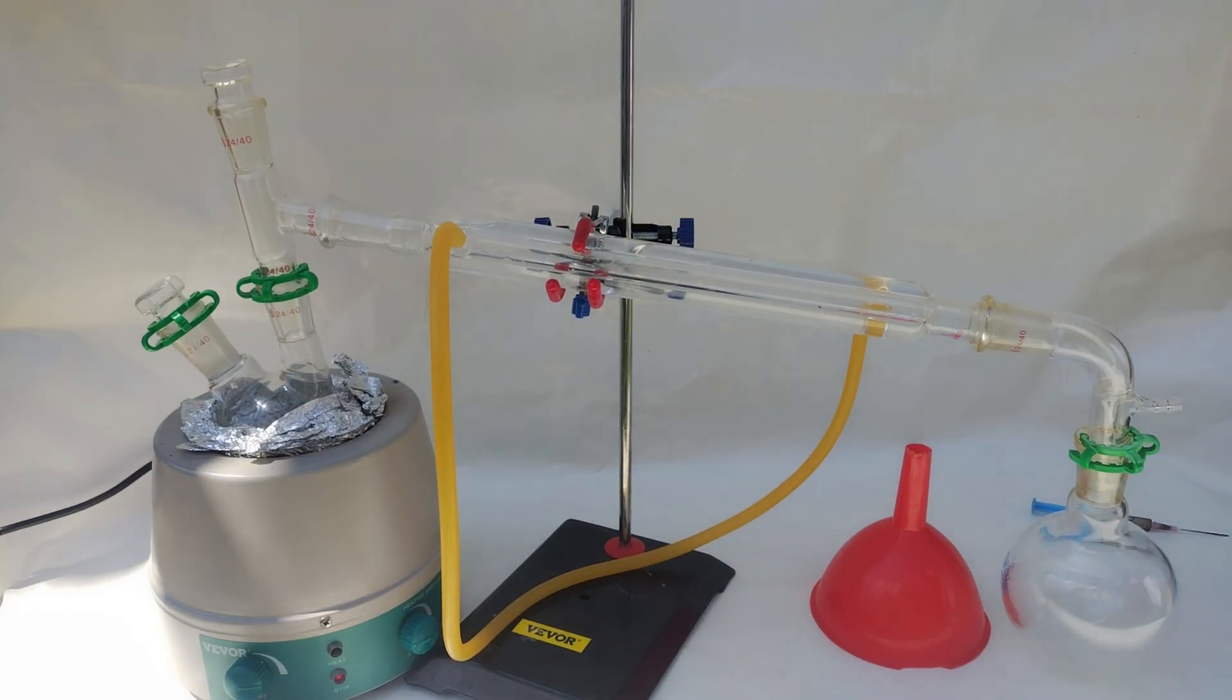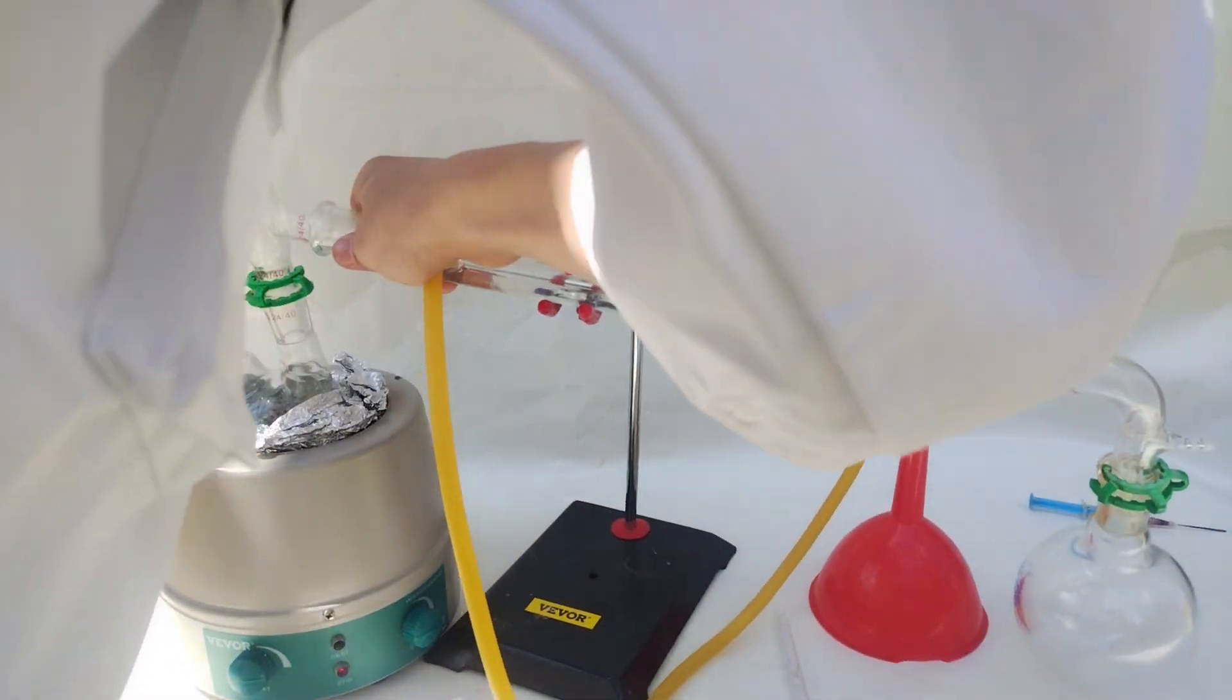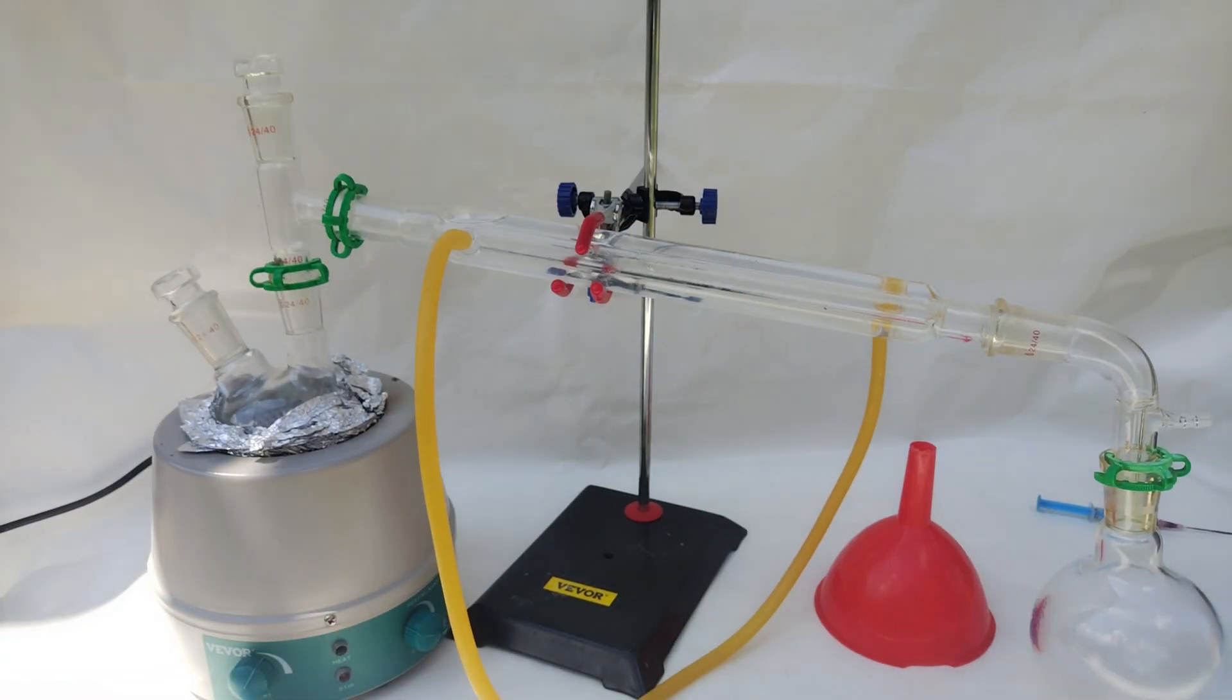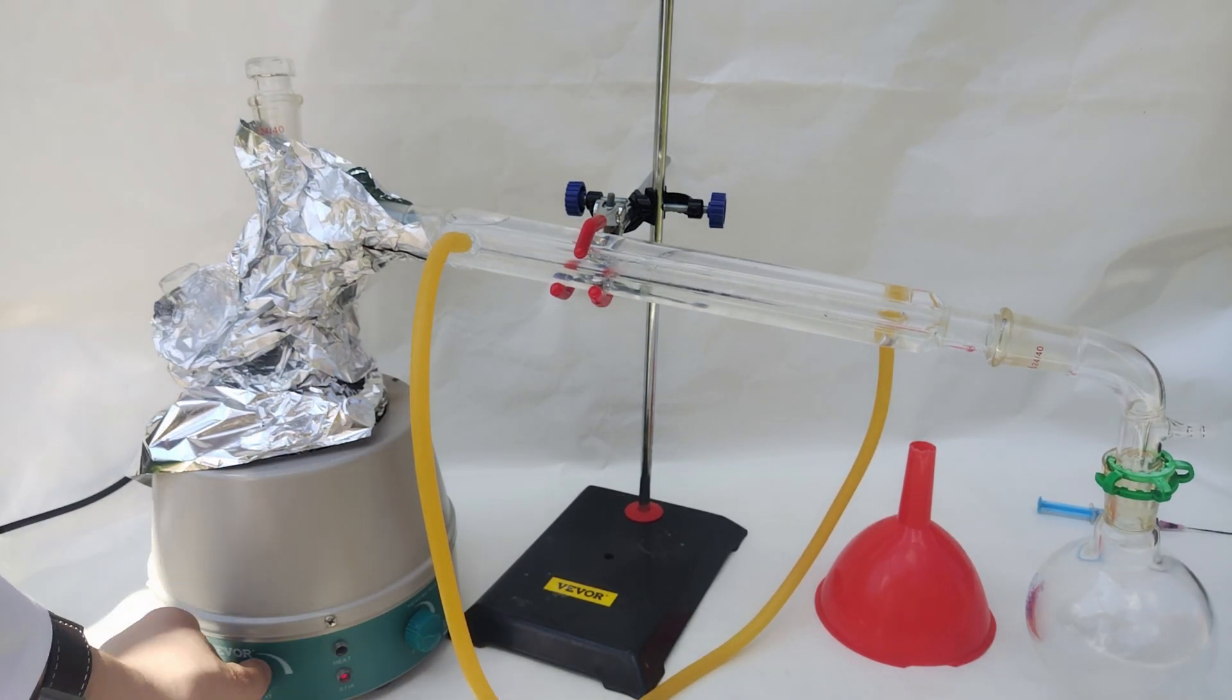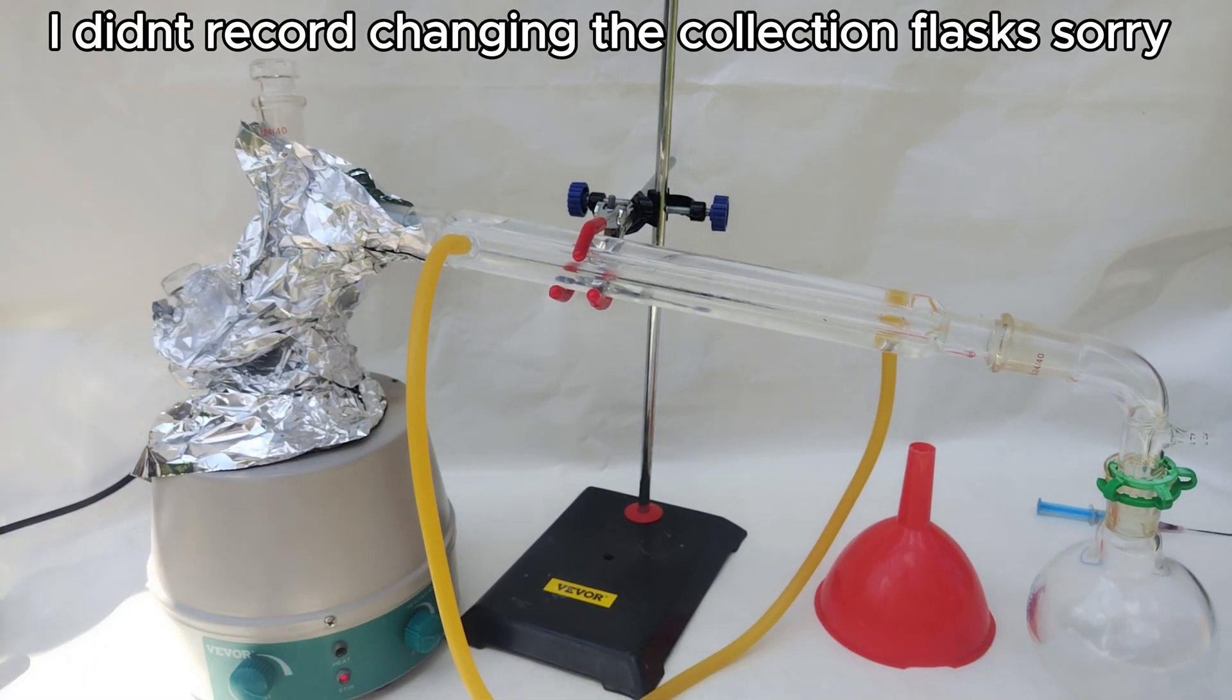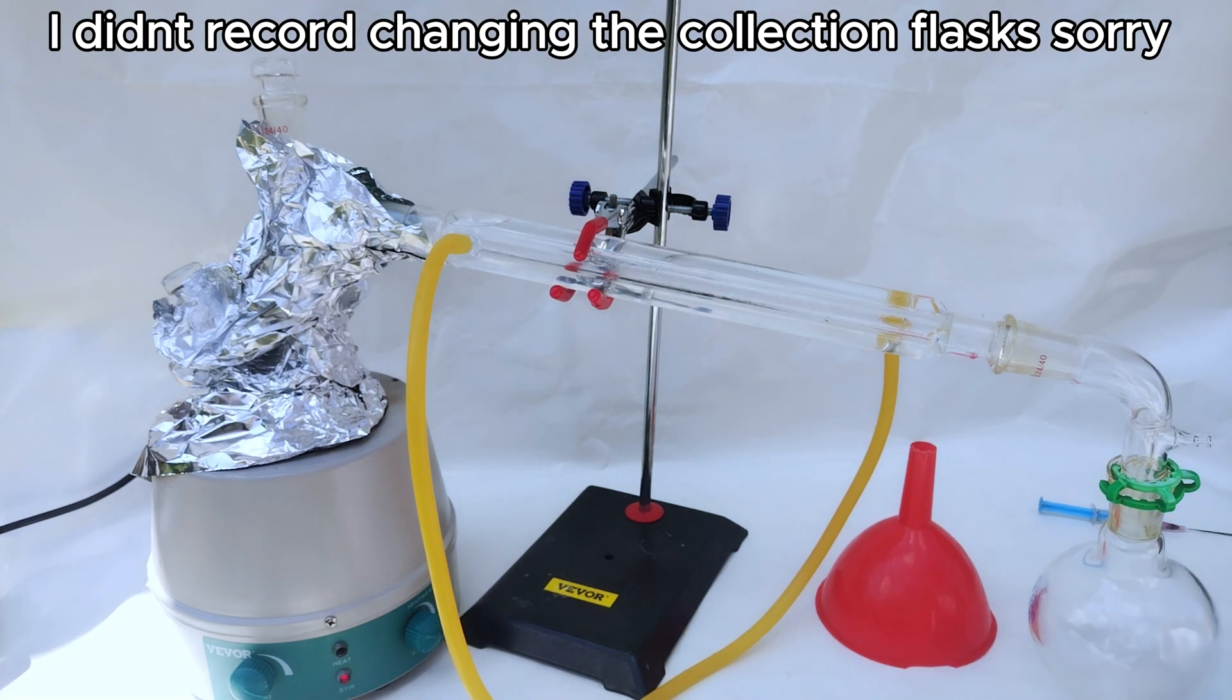At this point, we have a reasonably clean chloroform, but we want it to be even better, so we set up a distillation apparatus. We discard everything under 60 degrees Celsius, and we keep the 60 to 62 degrees Celsius fraction.